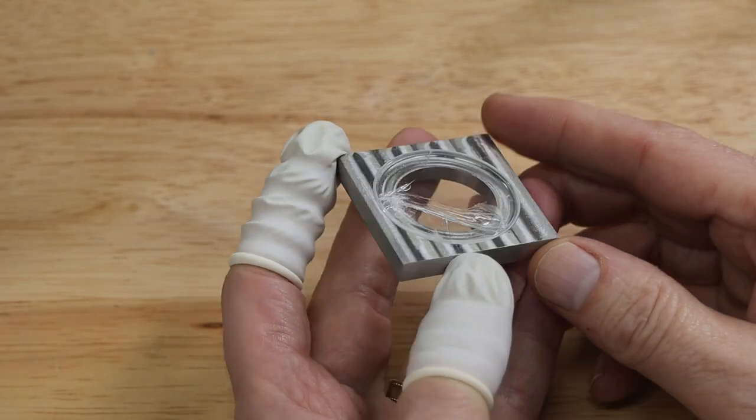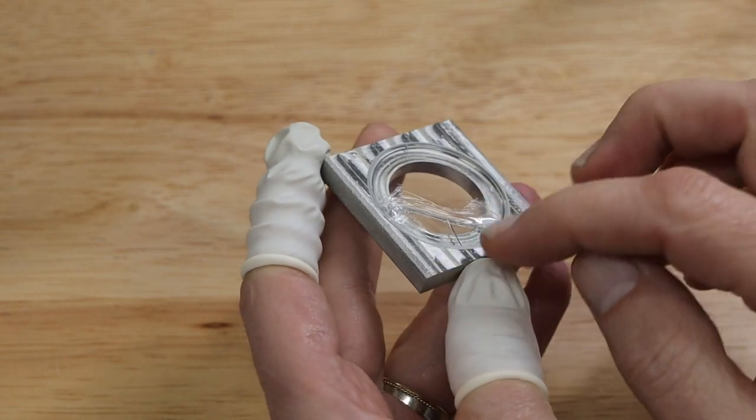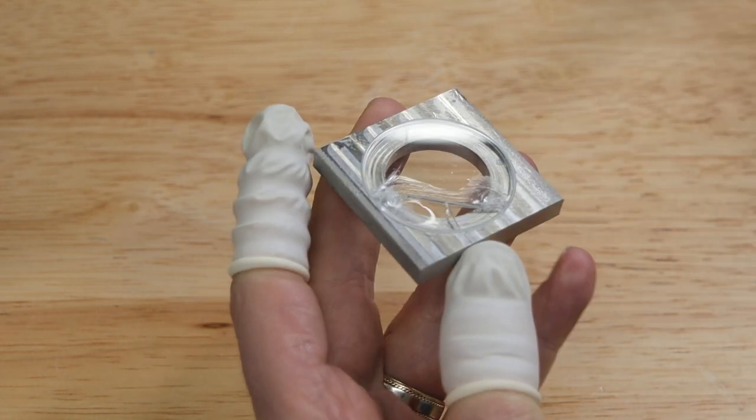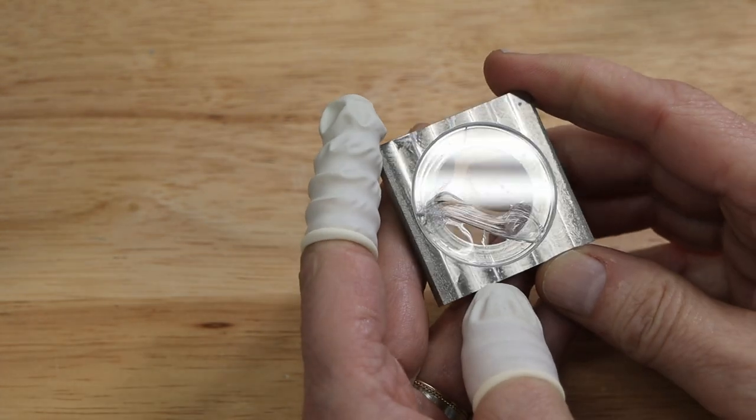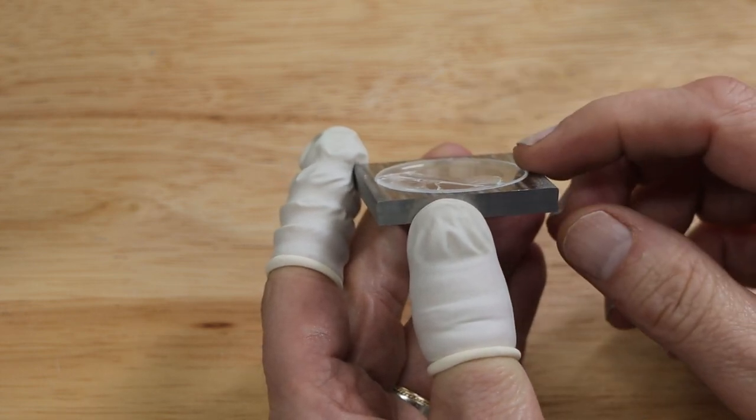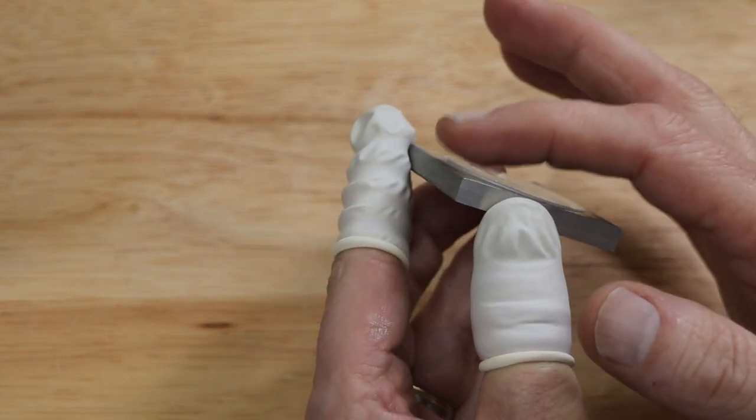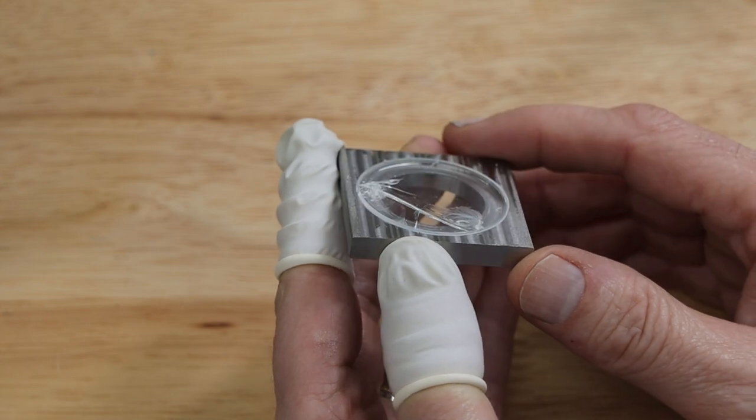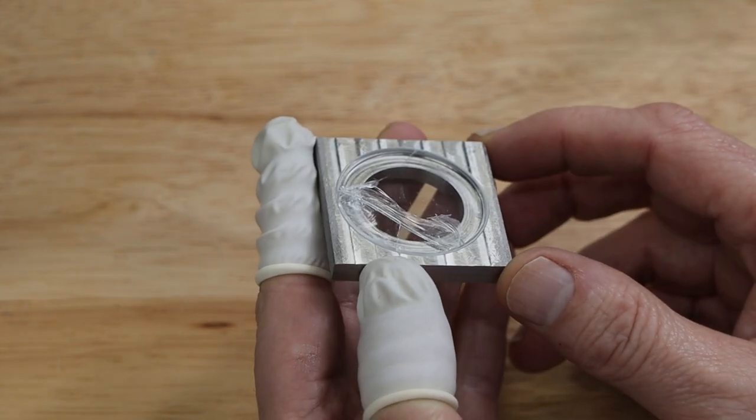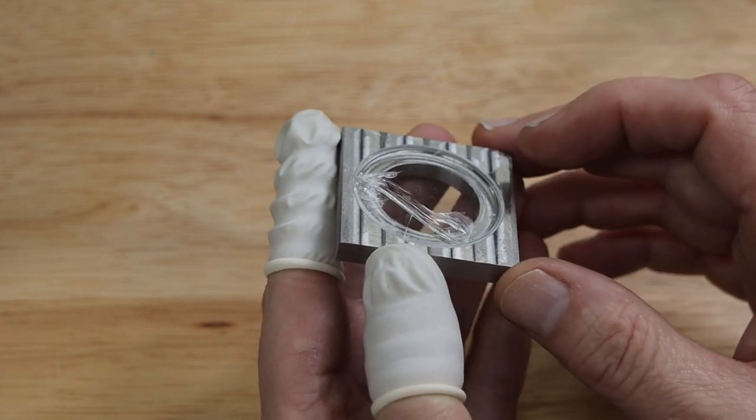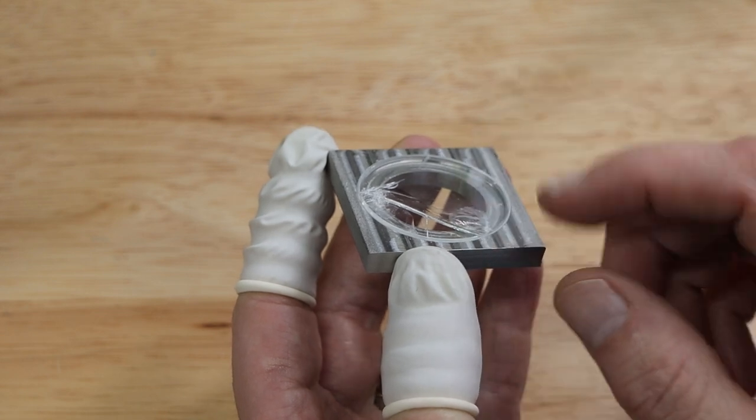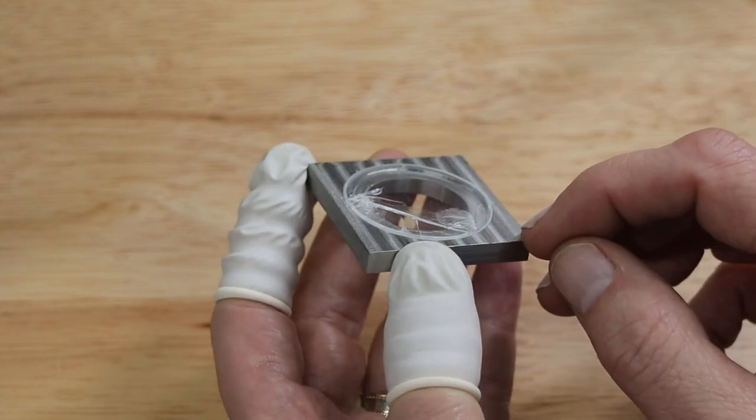So I did something that, well, in hindsight, I shouldn't have done, which is I decided to use this and push down on one side rather than the whole thing at one time, and well, it broke. The reason I did that is because this was seated quite well on one side, but it was proud on the other side. So I thought maybe if I did that, I could get it seated correctly. But I think maybe it's just the wrong size glass. So I'm going to see if I can take this piece of glass out here and put in a slightly smaller crystal and see how that goes.